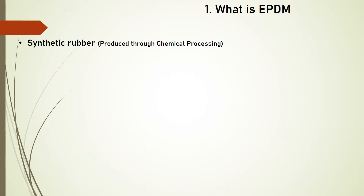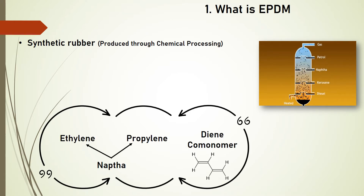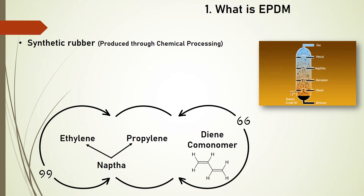EPDM is a synthetic rubber processed through chemical processing and naphtha. Naphtha is a by-product of crude oil, which is the basic material for manufacturing EPDM rubber. Ethylene and propylene are produced from naphtha and taken further for processing. Then a co-monomer is added, which is a double-bonded hydrogen, and it is produced into EPDM rubber.